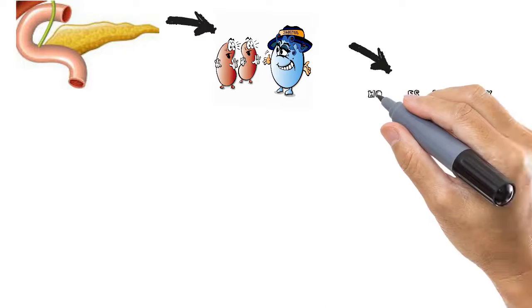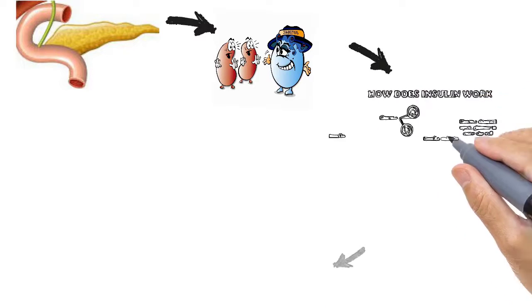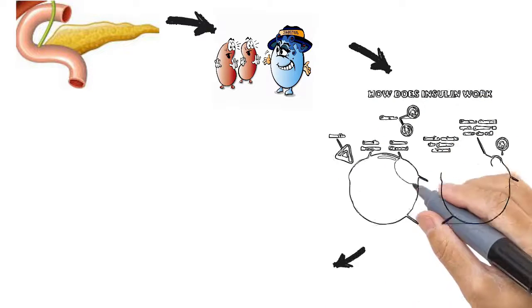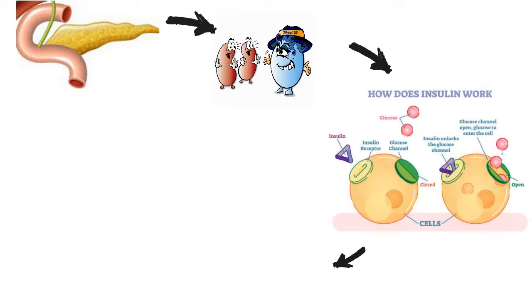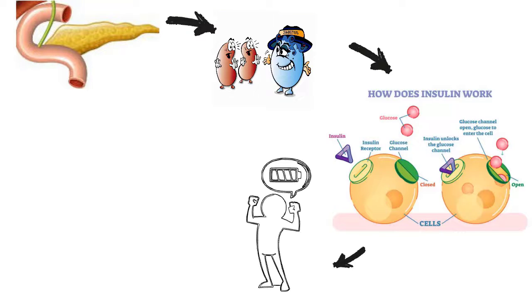Diabetes is a chronic disease that occurs when the pancreas is no longer able to make insulin. Insulin is a hormone made by the pancreas that acts like a key to let glucose from the food we eat pass from the bloodstream into the cells in the body.